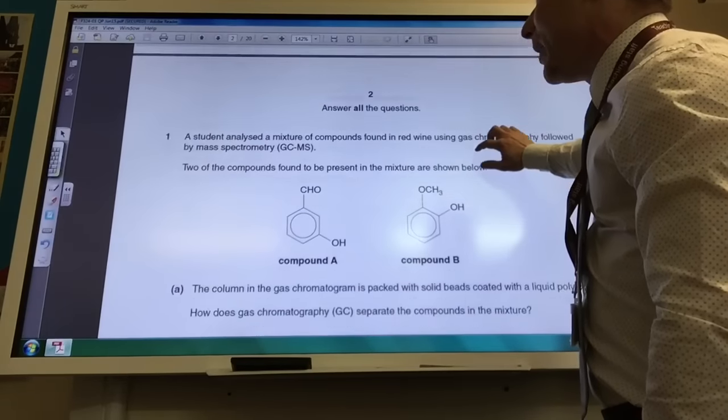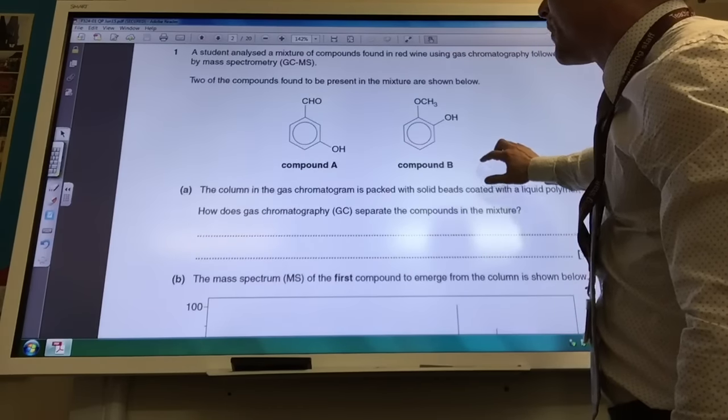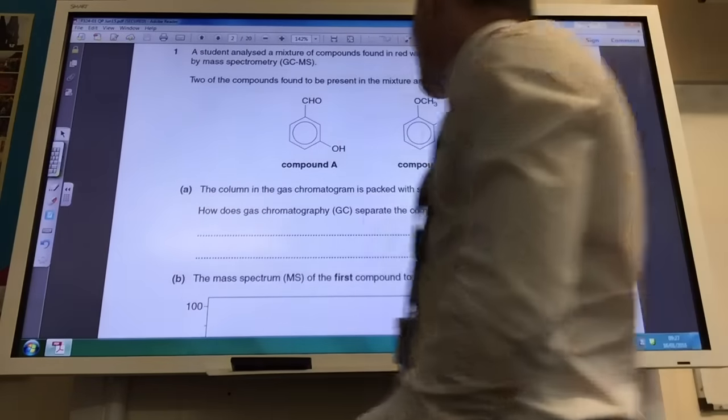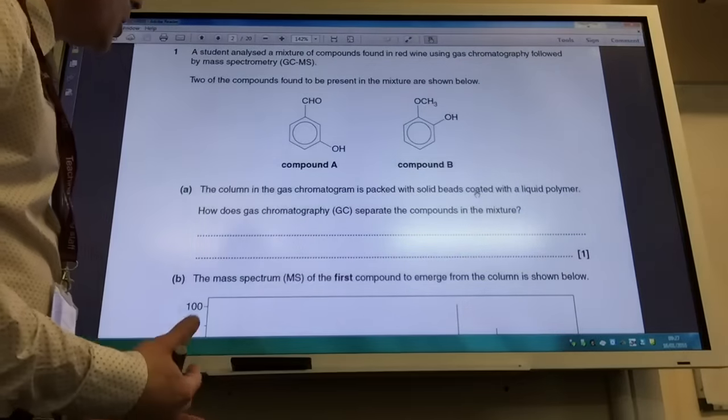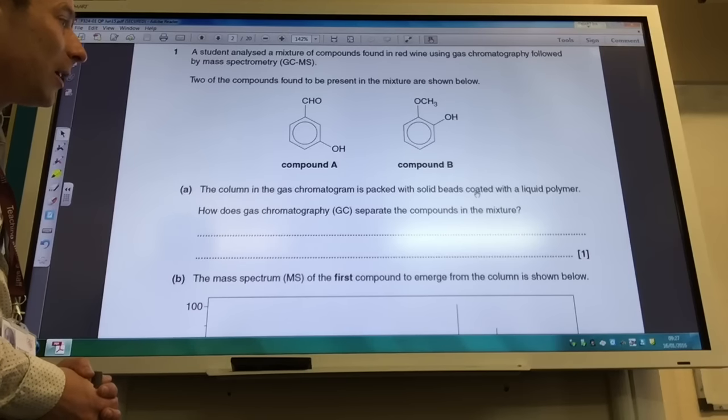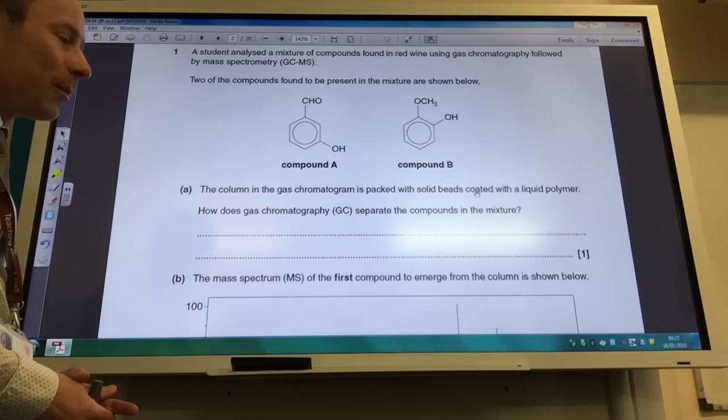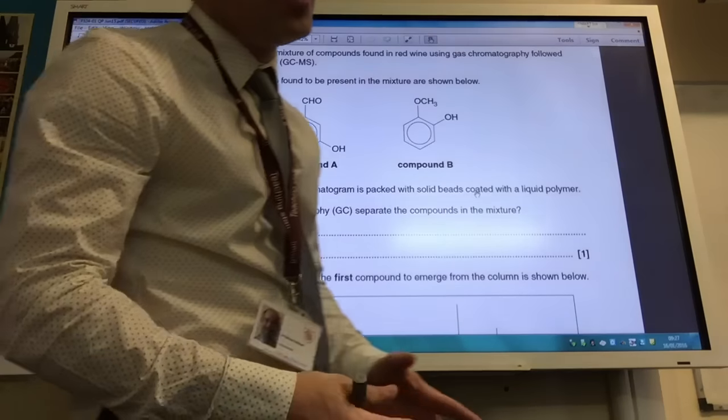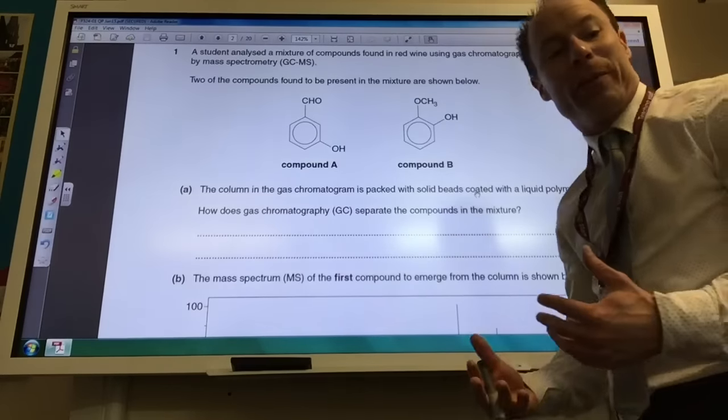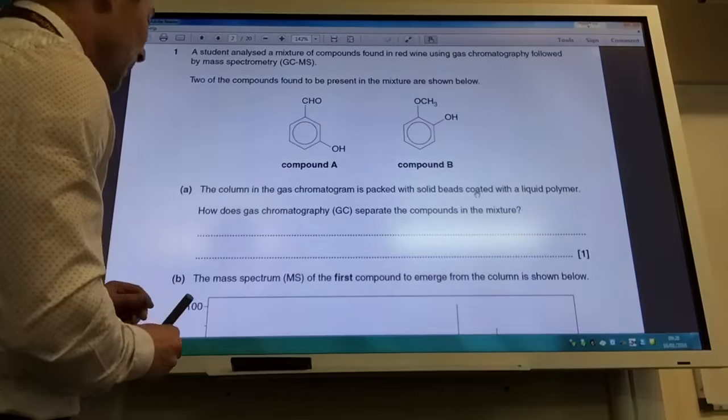First one, we have a student analyzing a mixture of compounds found in red wine using gas chromatography. Two of the compounds found to be present in the mixture are shown below. The column of the gas chromatogram is packed with solid beads with a liquid polymer. How does gas chromatography separate the components in the mixture? Remember, for gas chromatography it depends on the relative solubility in the stationary phase as to how that separates the mixture.